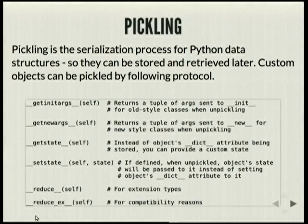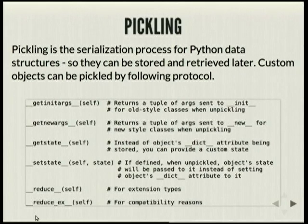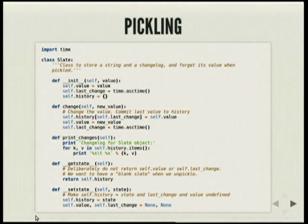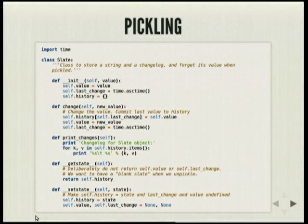Pickling is serialization for Python data structures, so they can be stored and retrieved later. You can also use magic methods to customize how your object gets pickled. In this example, we're just storing the value and the last change, and the history dict keeps a record of when the value was changed. Whenever we're getting state, we return that history dictionary, and whenever it's unpickled via __setstate__, we keep the history but the value and last change are set to None — so after pickling and unpickling, the slate is clean.